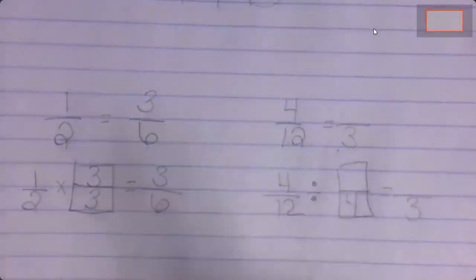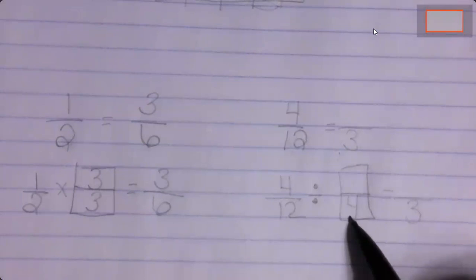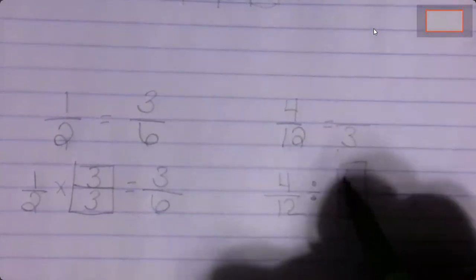Remember, we're dividing by a fraction that equals one. So if my denominator is four, my numerator is going to be the same number — four. And then four divided by four is one. So we're saying that four-twelfths is equivalent to one-third.